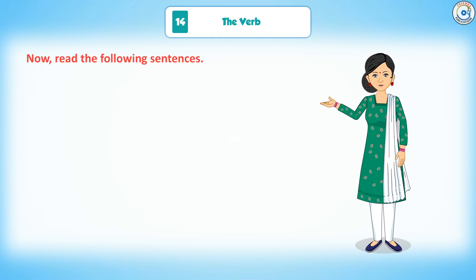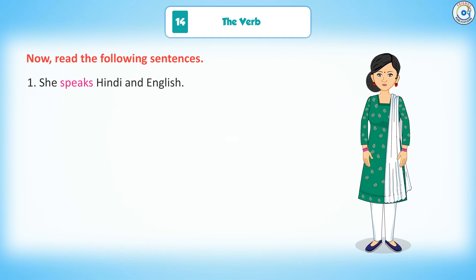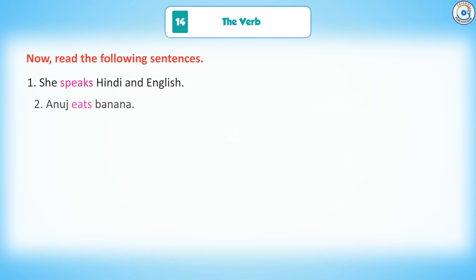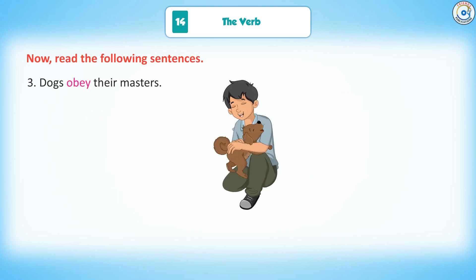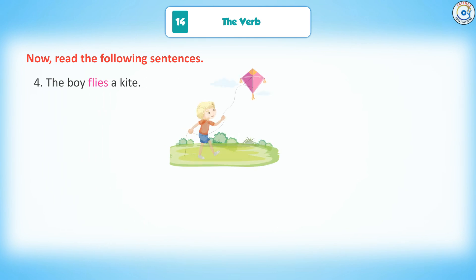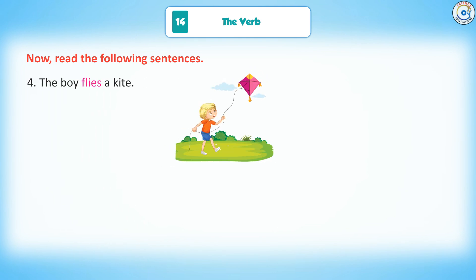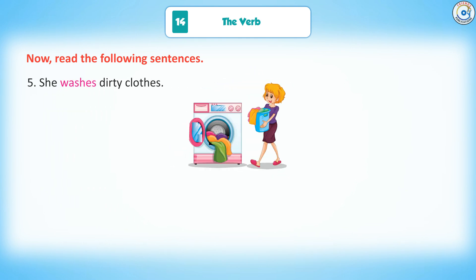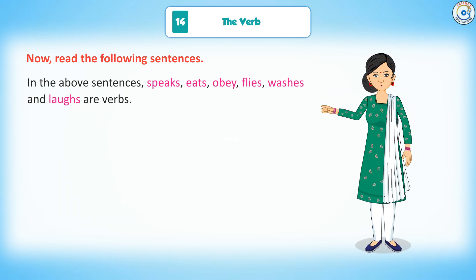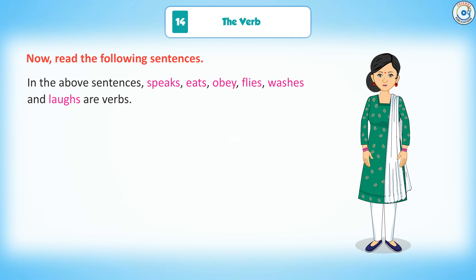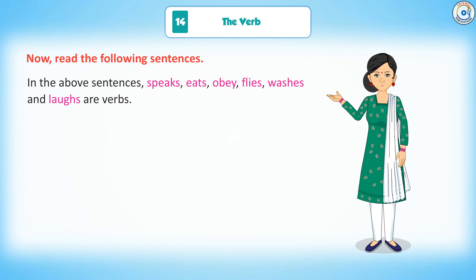Now, read the following sentences. 1. She speaks Hindi and English. 2. Anuj eats banana. 3. Dogs obey their masters. 4. The boy flies a kite. 5. She washes dirty clothes. 6. Nidhi laughs. In the above sentences, speaks, eats, obey, flies, washes, and laughs are verbs.